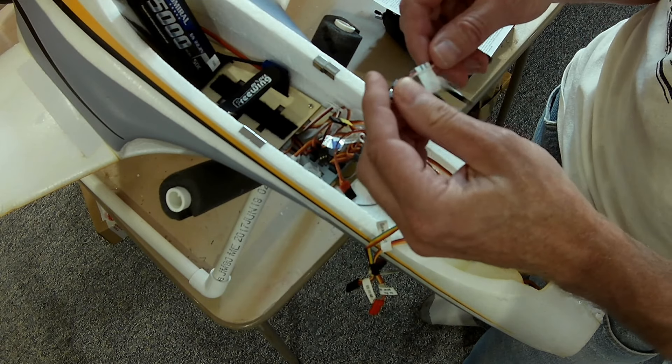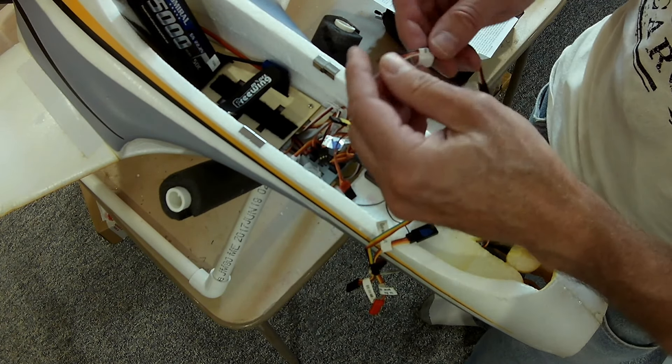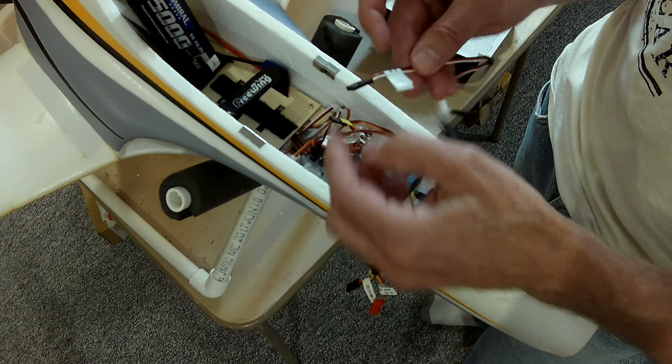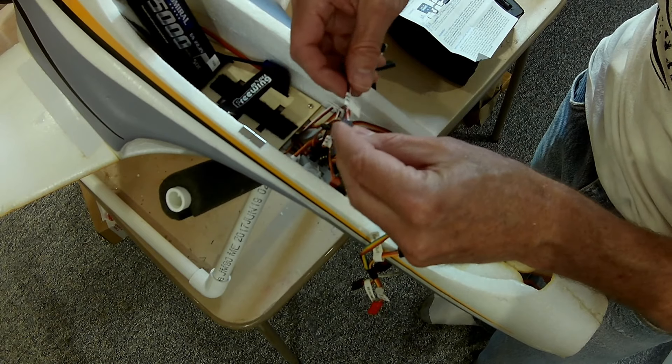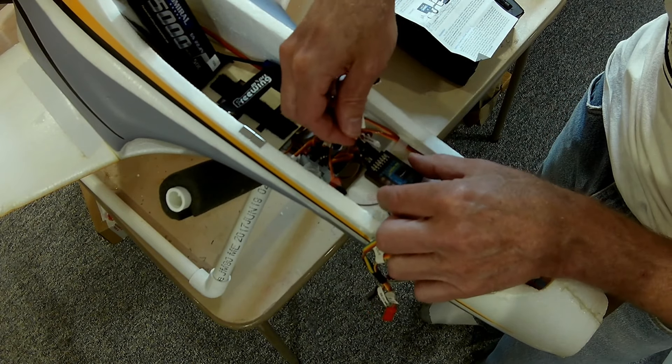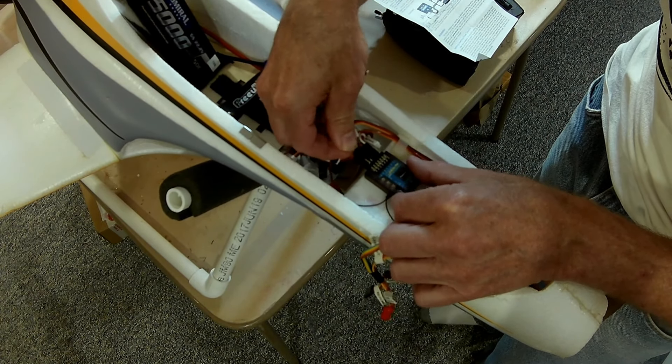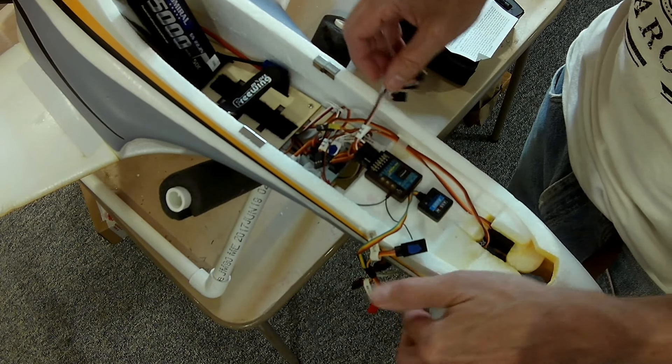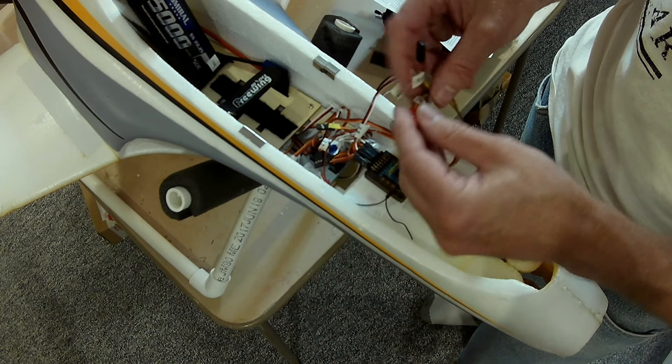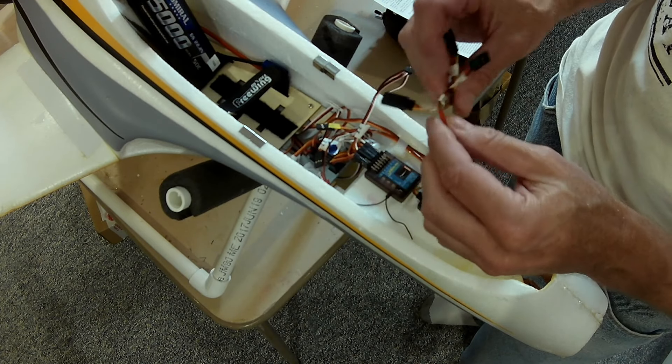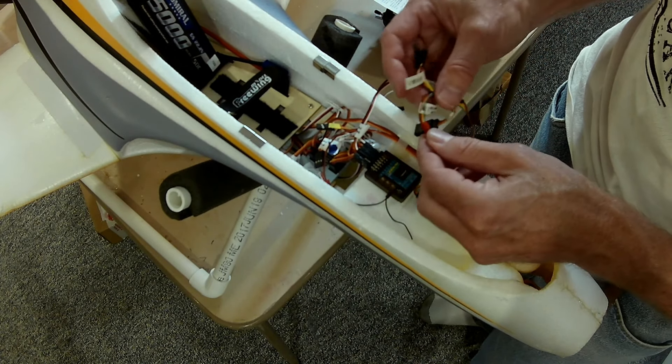The first thing you're going to do is put the end of the Y cable into the receiver channel for our rudder. Alright, now I've got this mounted already so yours will be kind of flopping around. The next thing you're going to do is hook up this red end into the receiver gear channel.